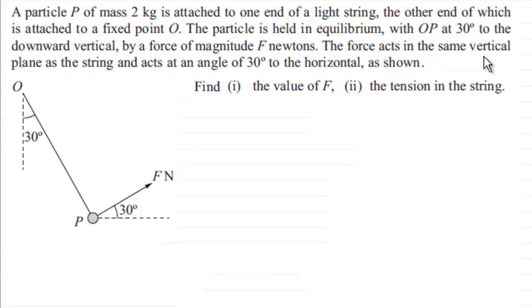What we've got here is a particle P of mass two kilograms attached to one end of a light string, the other end of which is attached to a fixed point. The particle is held in equilibrium with OP making an angle of 30 degrees to the downward vertical by a force of F Newtons. This force acts in the same vertical plane as the string and acts at an angle of 30 degrees to the horizontal.